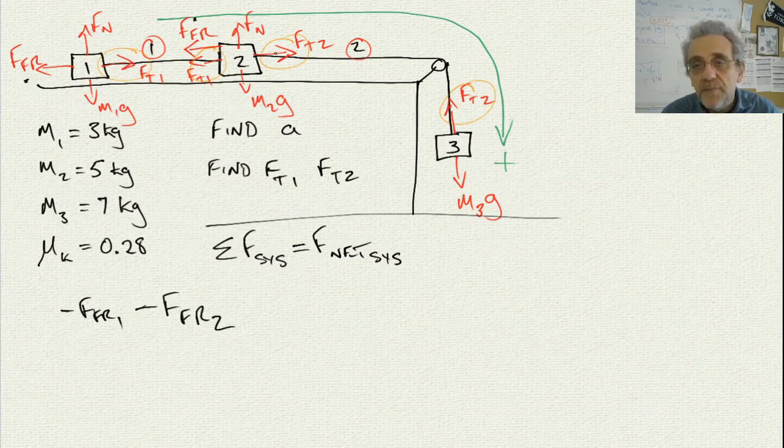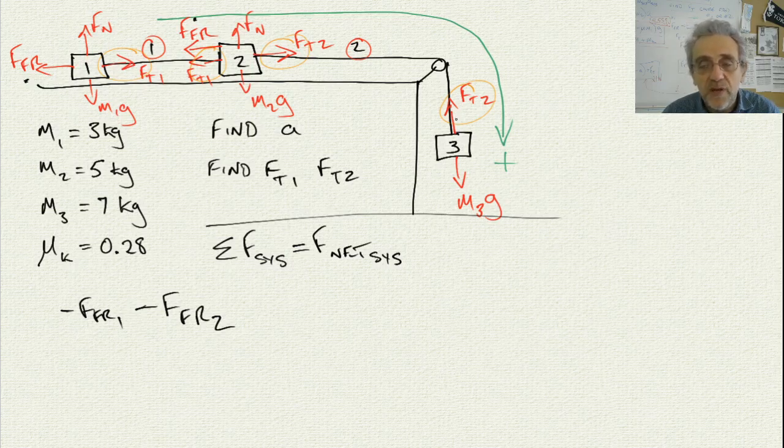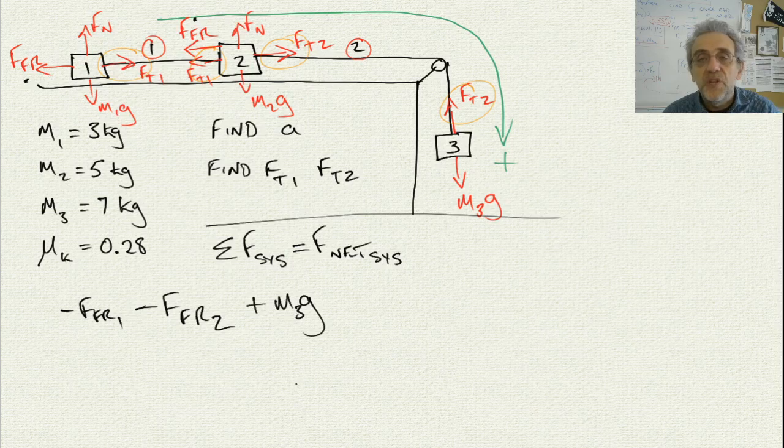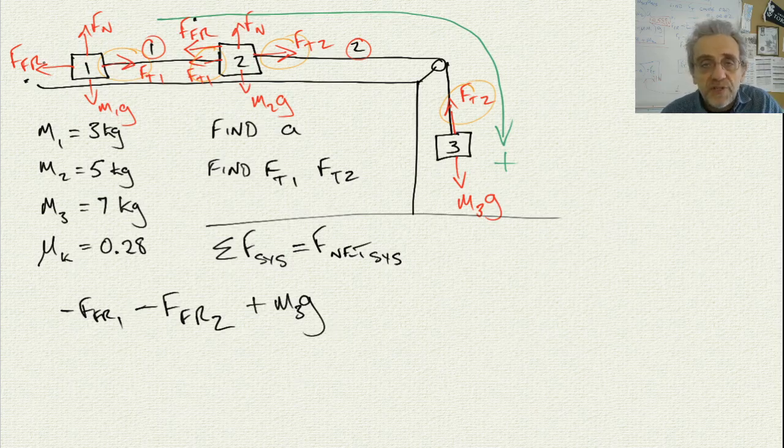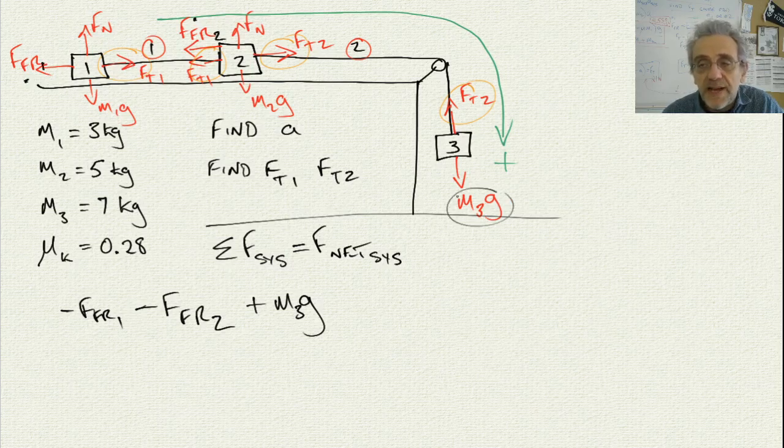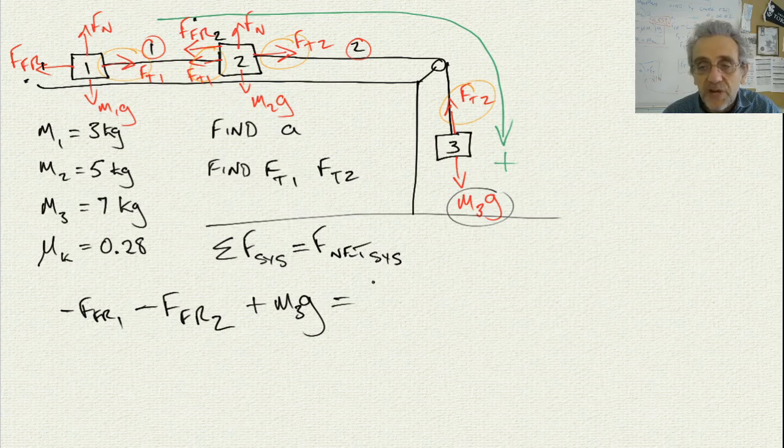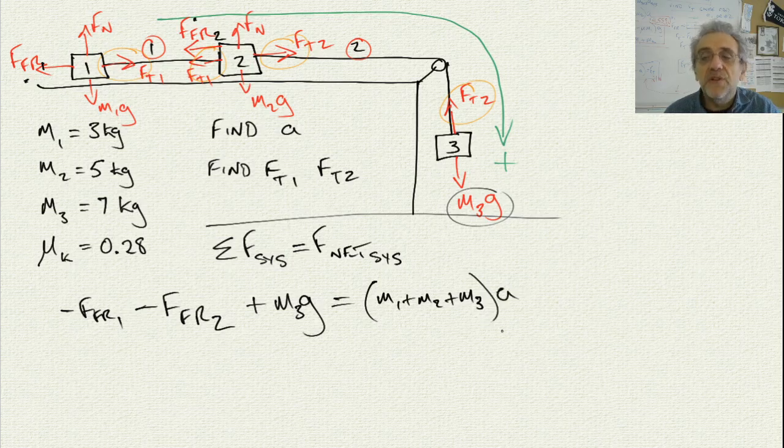That's this one here. Then I've got plus FT2 minus FT2. I can negate, I can ignore those as well, because they'll cancel out. Then I've got plus M3G. So essentially, the unbalanced forces in the system are friction force number one, friction force number two, and M3G down here. And there they are. Now this is going to equal the entire sum of all the masses multiplied by the acceleration of the whole system.